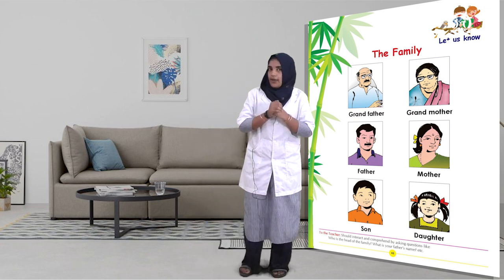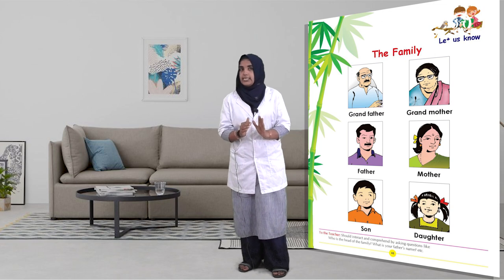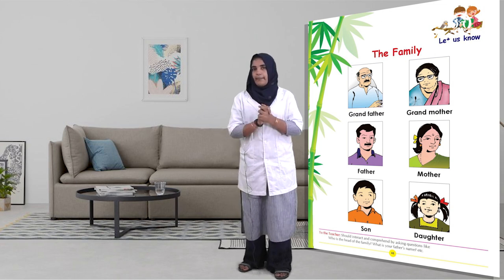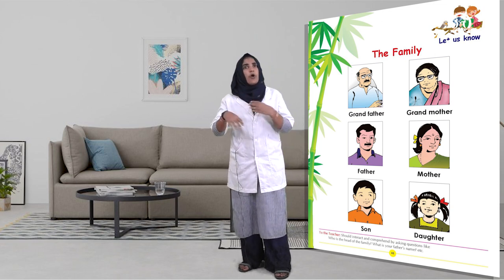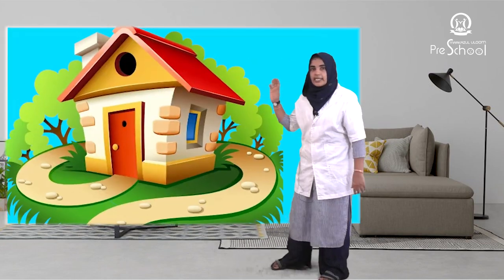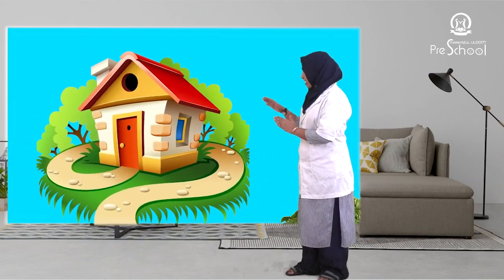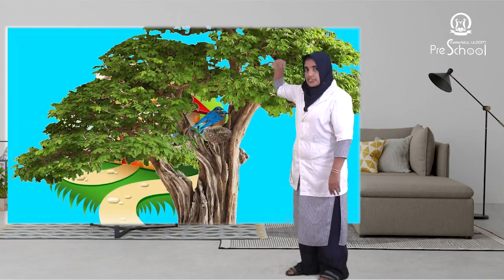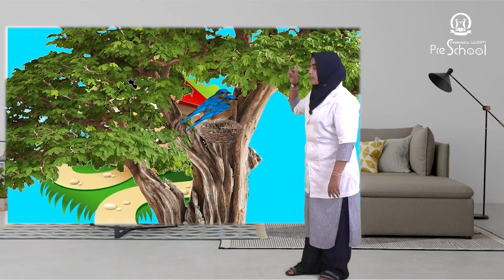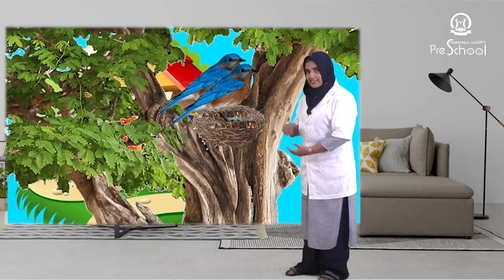We can talk more about this in the next class. Now look at here — one house. In front of the house, one tall tree. On the top of the tree, one nest is there. This is a nest. What is inside the nest? Two birds.